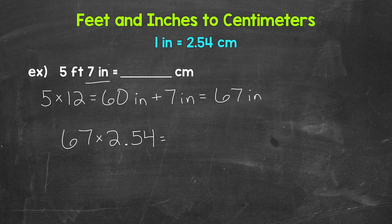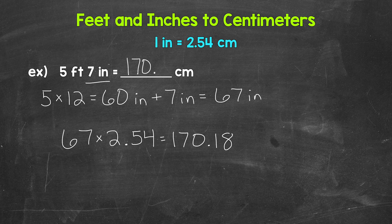Now 67 times 2.54 gives us 170.18. So 5 feet 7 inches equals 170.18 centimeters.